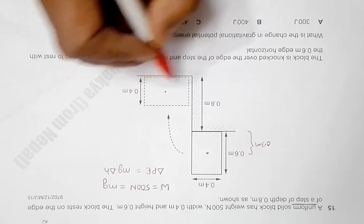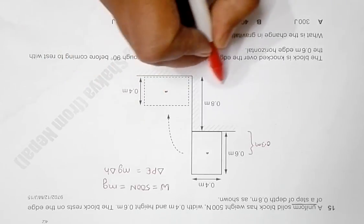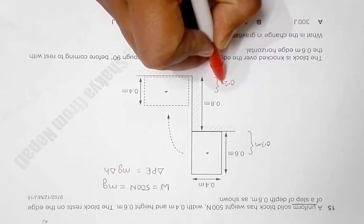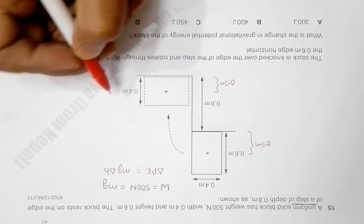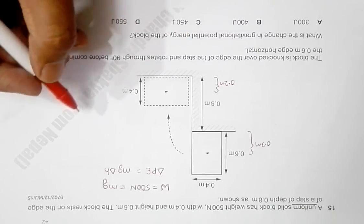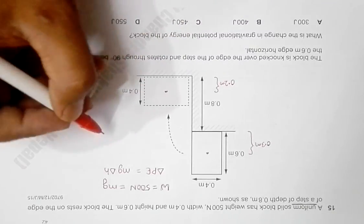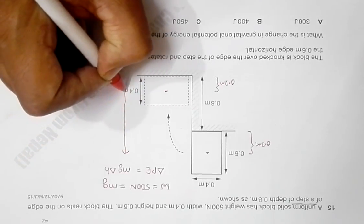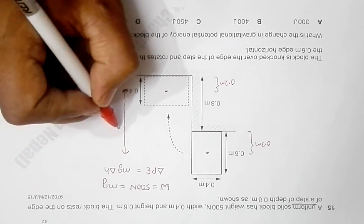And this height will be 0.2 meters because it is 0.4 meters. So that means now we can say that effectively the body has fallen from here till here, so this gives the ΔH.